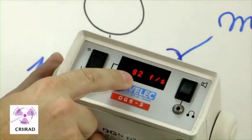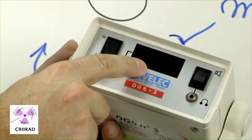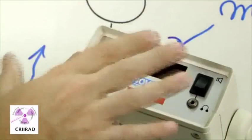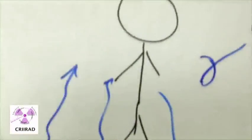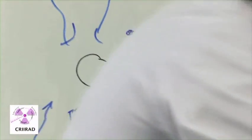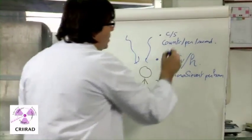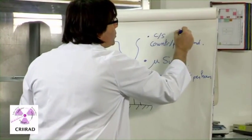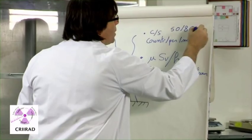At this moment, we have about 50 to 80 counts per second. It is a natural ambient radiation in the laboratory, which we call background radiation.